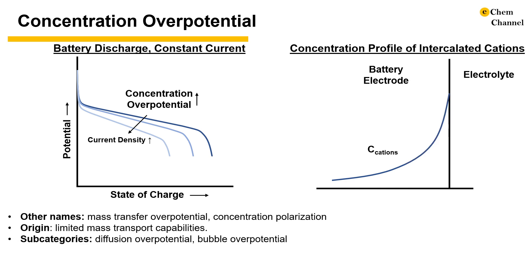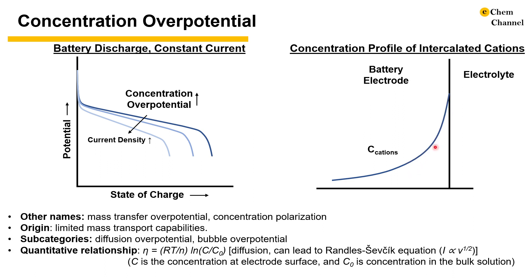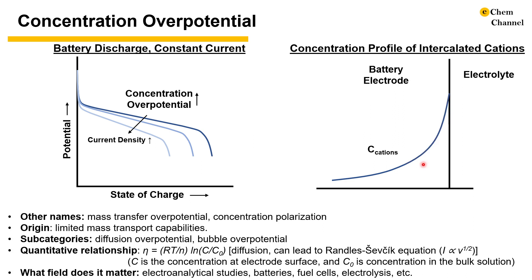Concentration overpotential has several subcategories. If we assume diffusion-dominated mass transport, then concentration overpotential can be called diffusion overpotential. In some scenarios, bubbles form on the electrode, depleting the reactants — this is called bubble overpotential. Assuming the concentration profile is controlled by diffusion, as shown in the graph on the right, concentration overpotential can be described by a quantitative relationship. If the diffusion space can be considered semi-infinite, one can derive the Randles-Ševčík equation, and get the current proportional to the square root of sweep rate relationship. Concentration overpotential is essential to electroanalytical studies and acts as an important factor for energy losses in batteries, fuel cells, and electrolysis.